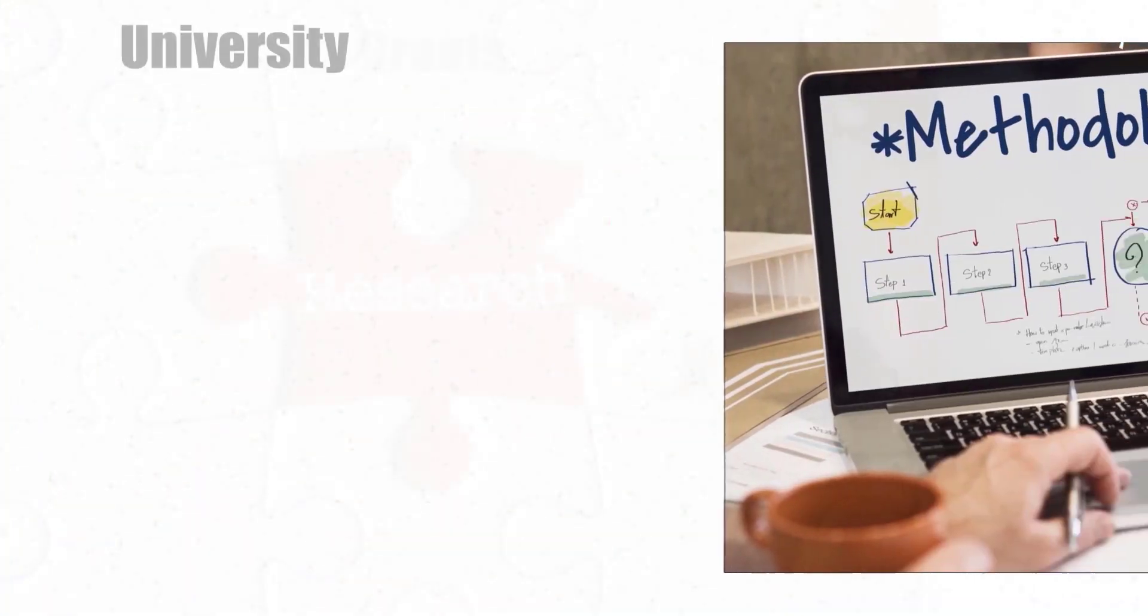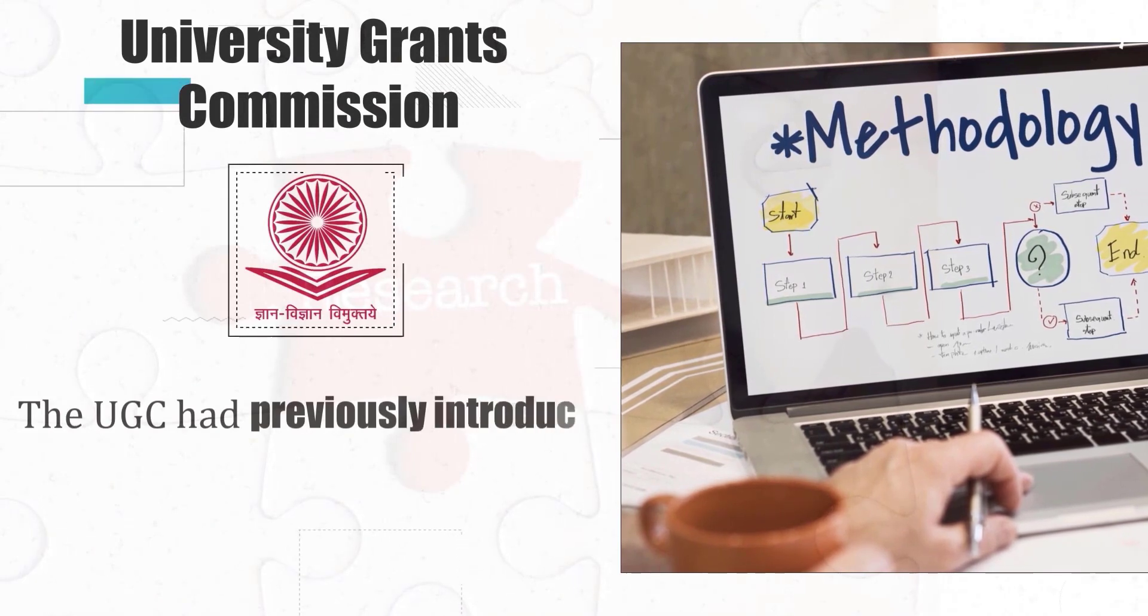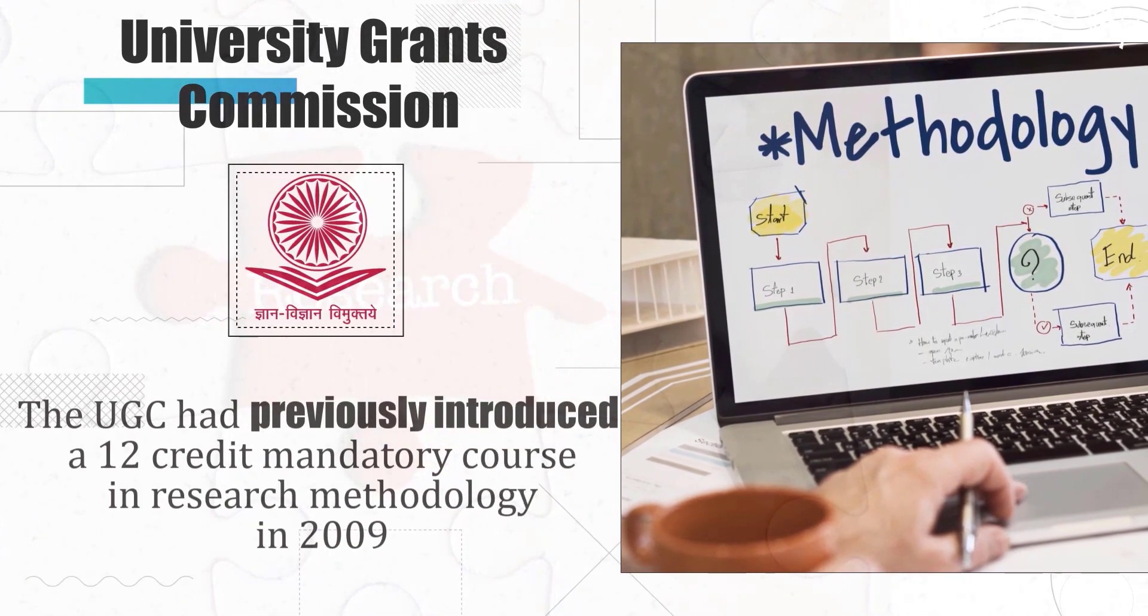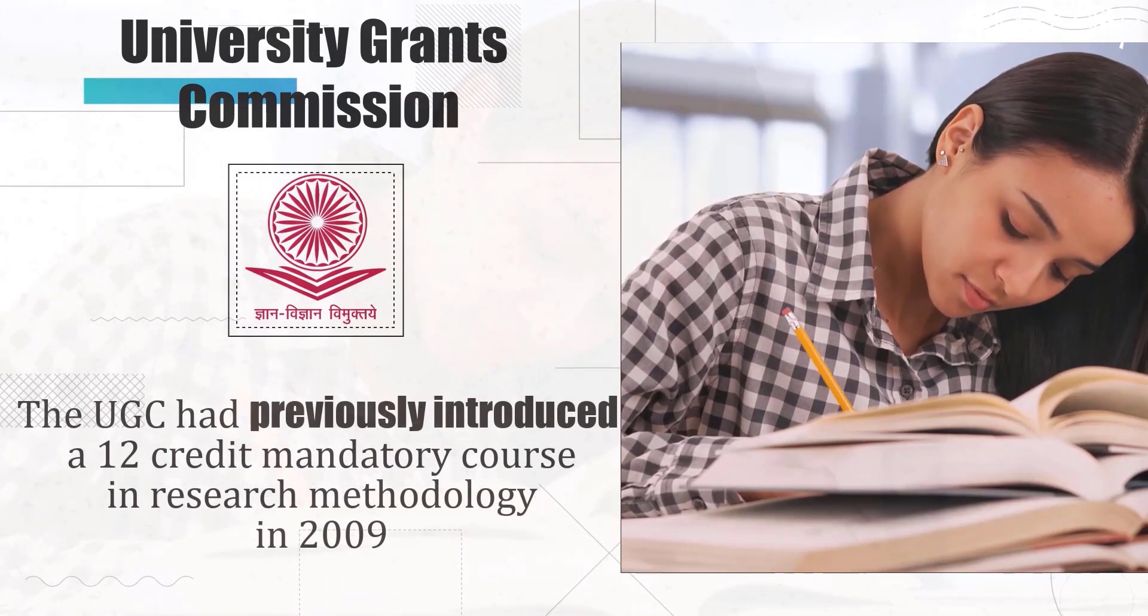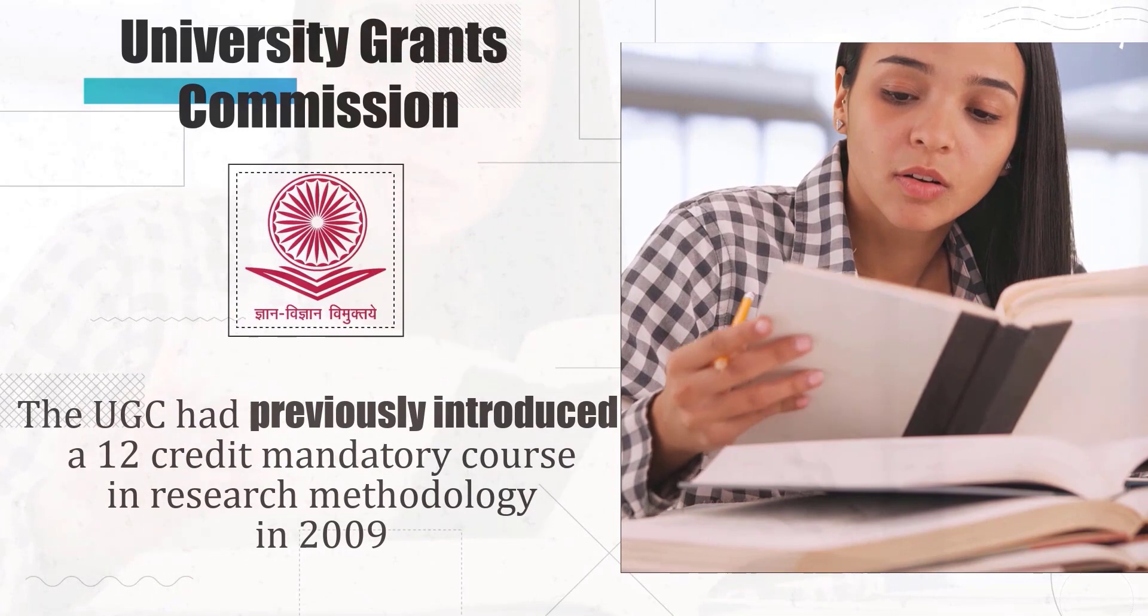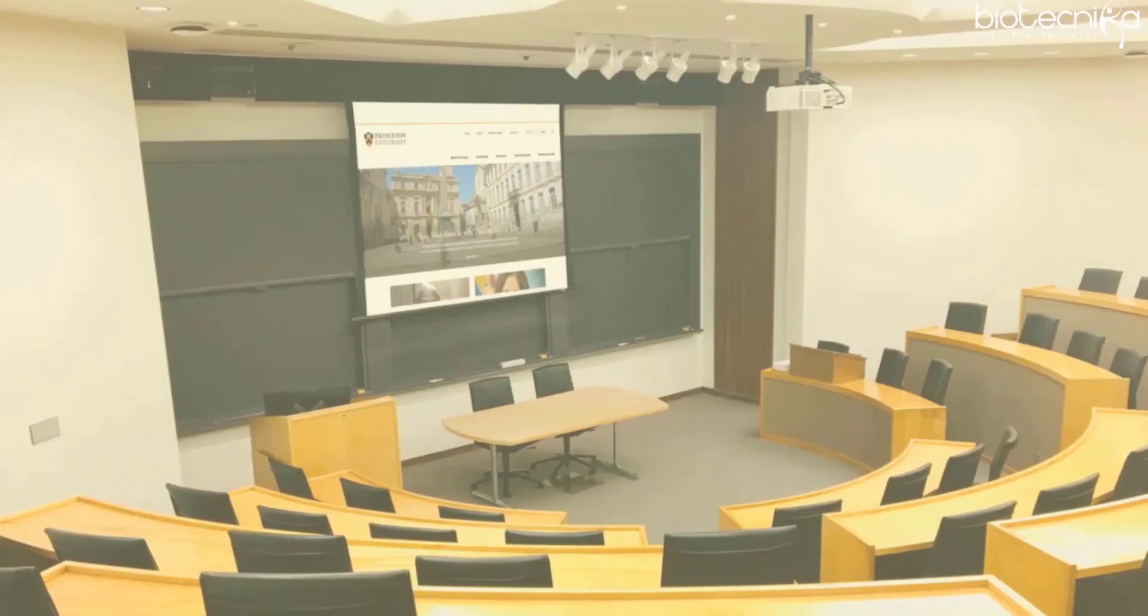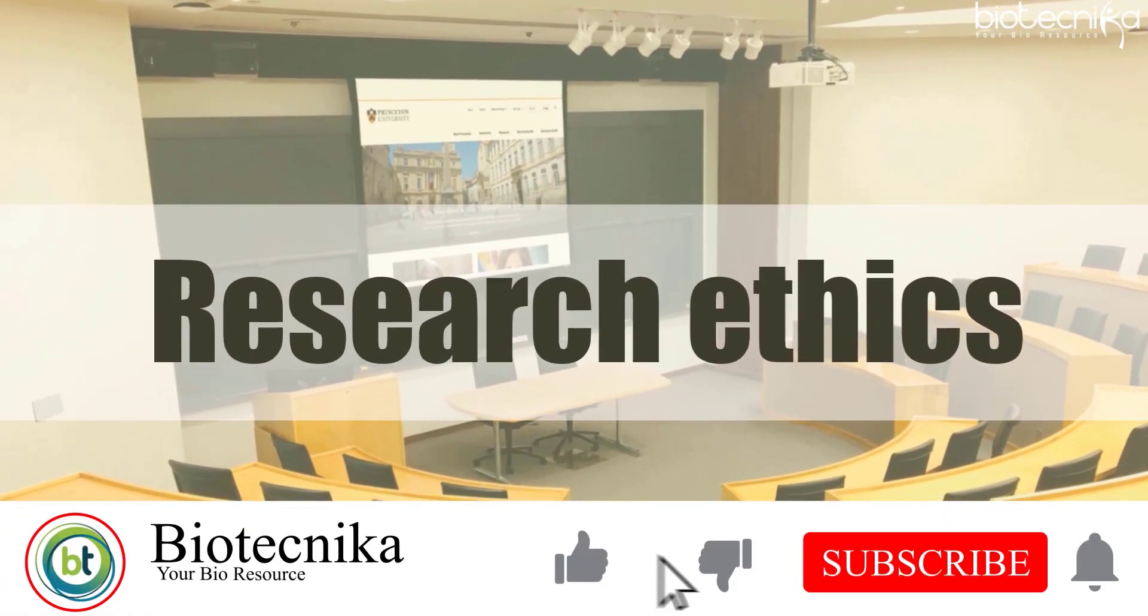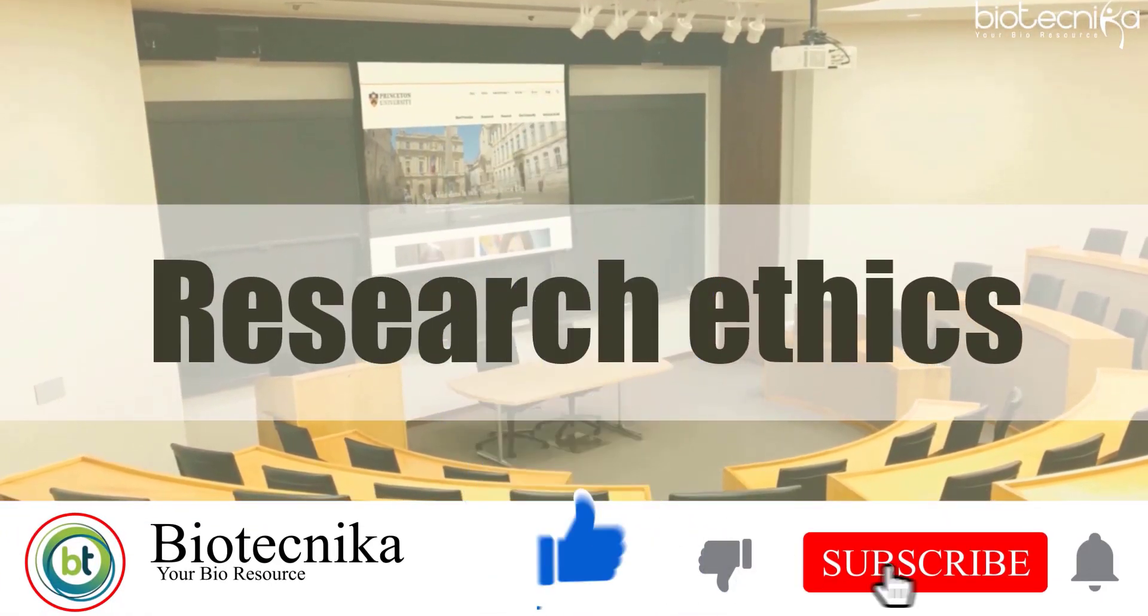The UGC had previously introduced a 12-credit mandatory course in research methodology in 2009 that included a few chapters on research ethics, but the new two-credit course will be more focused on enlightening students about research ethics and the consequences of messing up with rules.